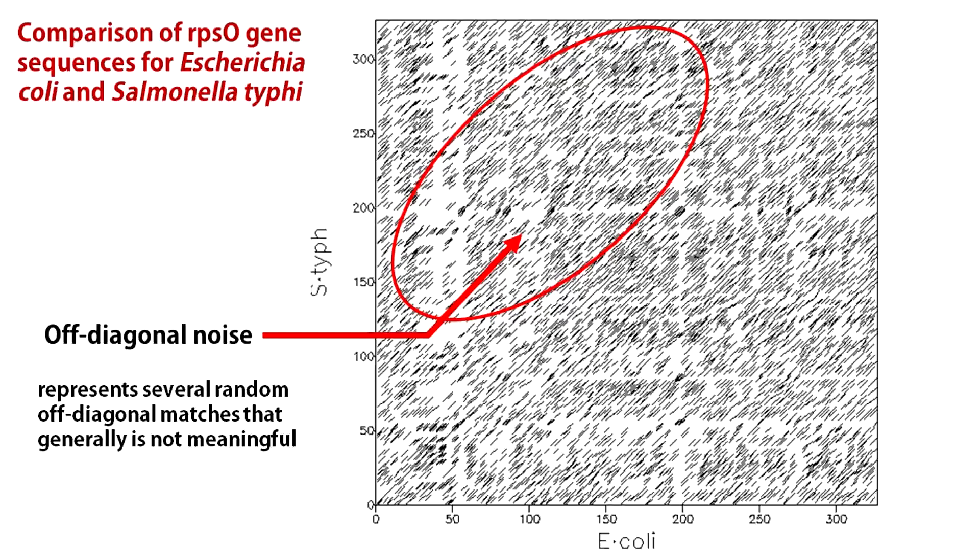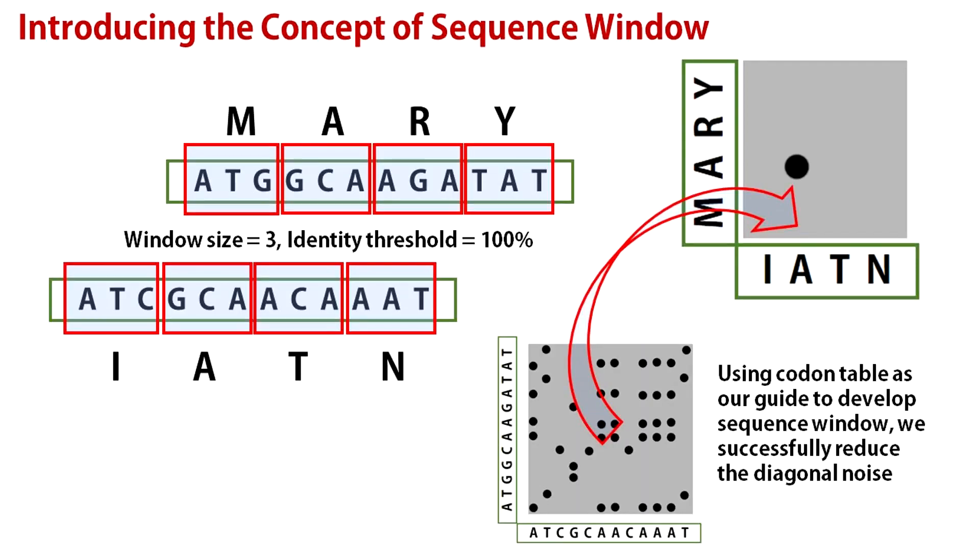One way to do so is to use a sequence window instead of individual characters. Let me show you an example. We use the codon table to translate the nucleotide sequences into amino acid sequences. So in this case, we are using a window size of three nucleotides. The method for dot plot is the same. If identical amino acids match, we put a dot.